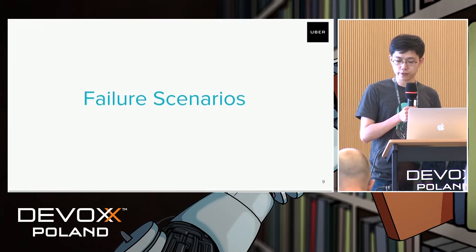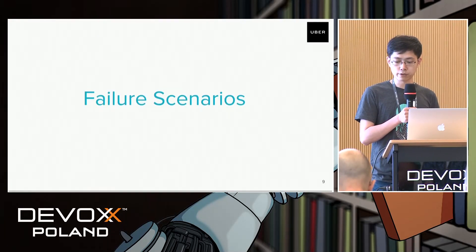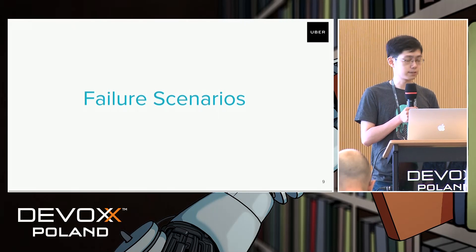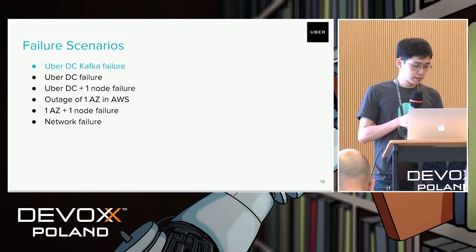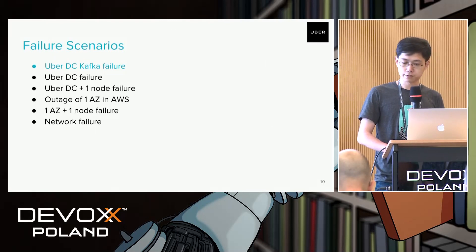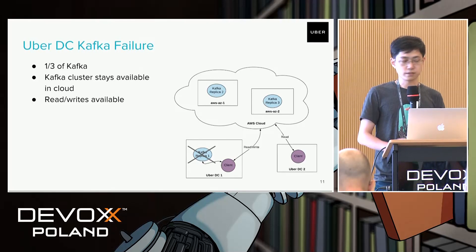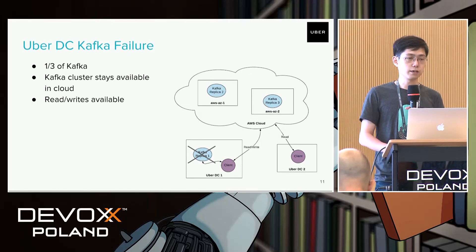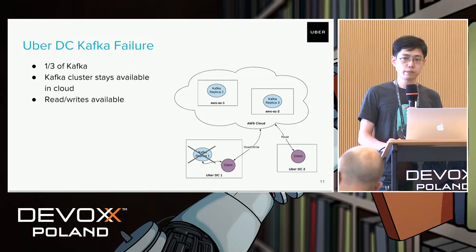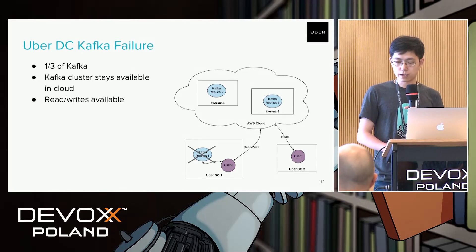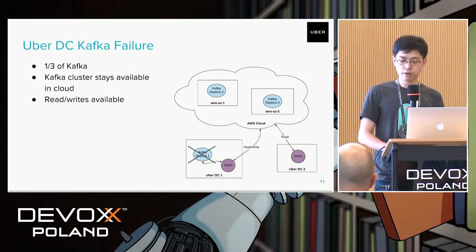Let's talk about the failure scenarios we want to support in the XDC Kafka cluster. The first scenario is Kafka nodes in the Uber data center going down. In this case one third of the Kafka cluster is down, but the whole service is still available in the cloud since there are still two replicas live there, and both reads and writes remain available for all clients in different data centers.